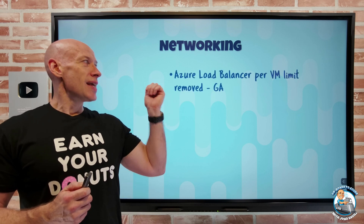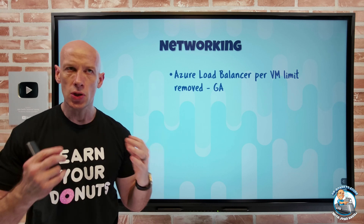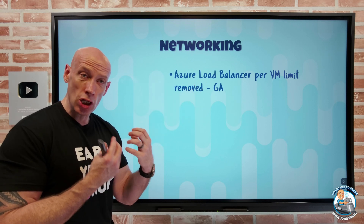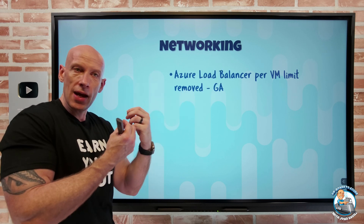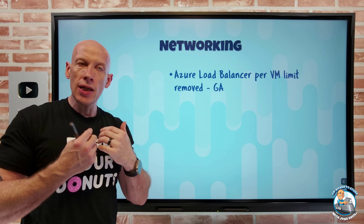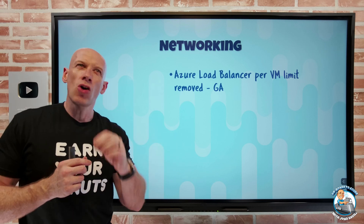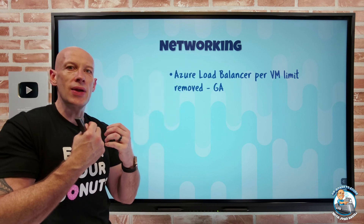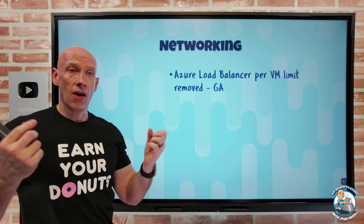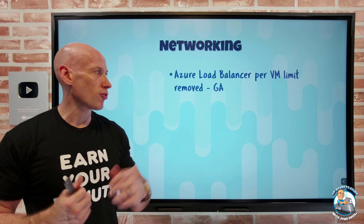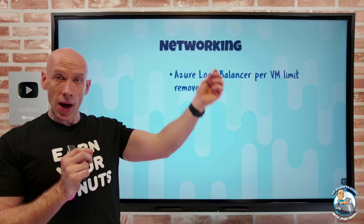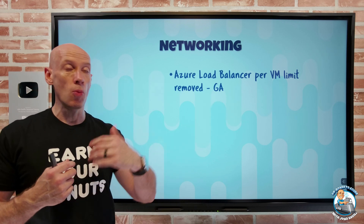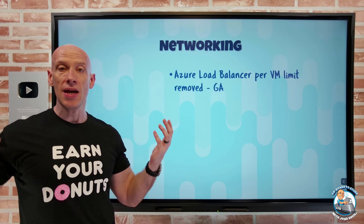On the networking side, the Azure Load Balancer per-VM limit has been removed. In the past, I could have external and internal load balancers — the Azure Load Balancer Standard could have a public front end or internal private front ends. A virtual machine could be a member of one of each, and that was all it could be. This was common because if you're part of an internal load balancer, you'd have no default internet egress path, so you'd also add it to an external load balancer. They've removed that limit, so now a VM can be a member of multiple public Azure Load Balancers, multiple internal, any combination, up to whatever the limit of the load balancer is.